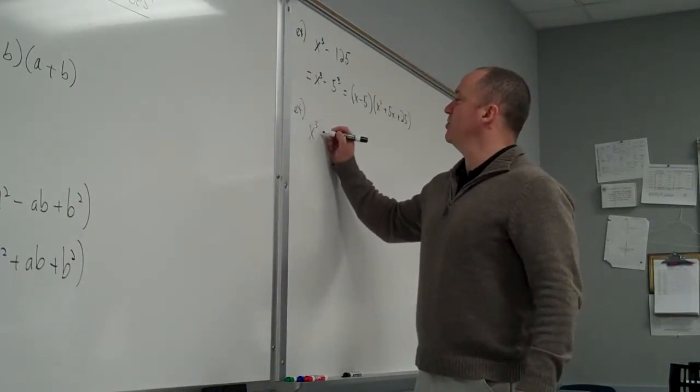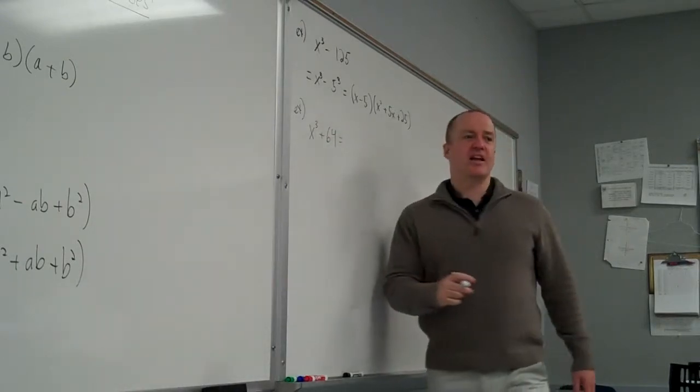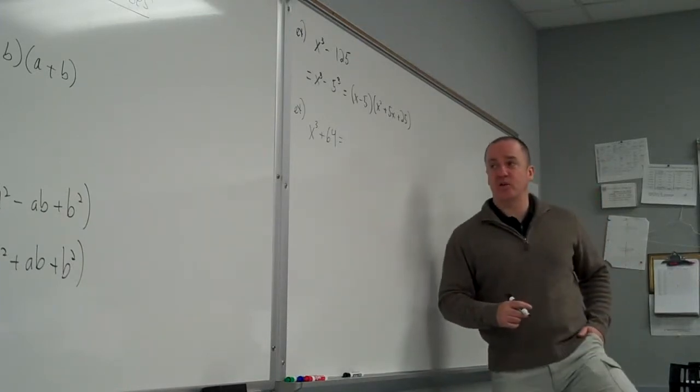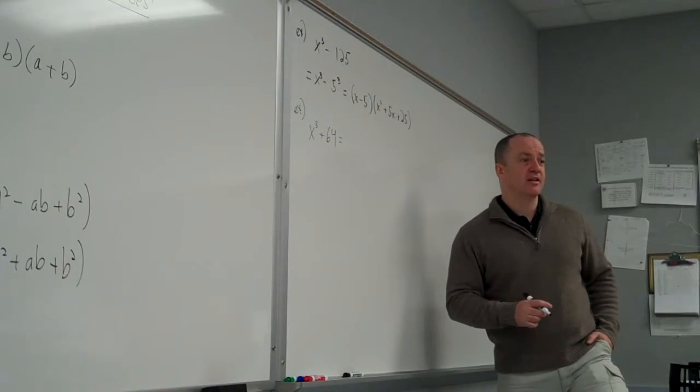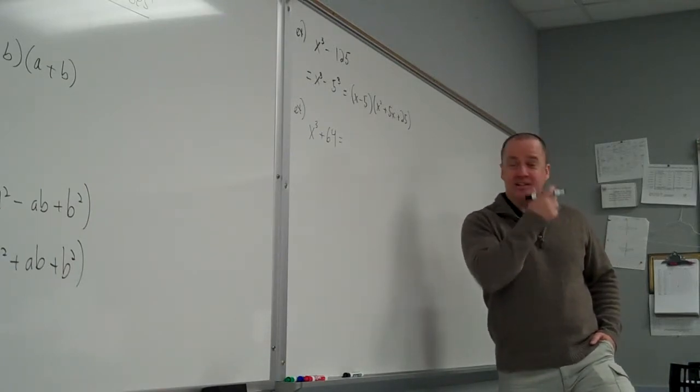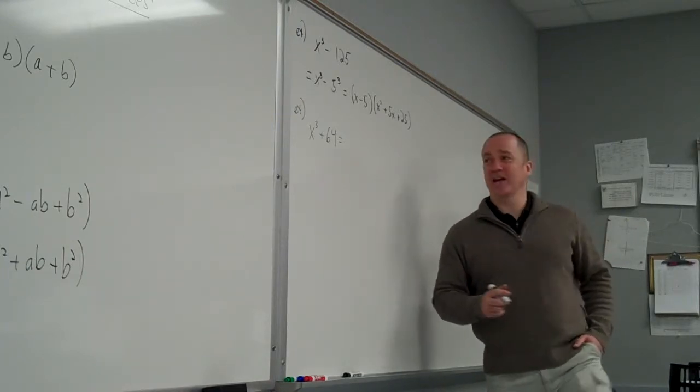I'll do another one that's fairly simple, I hope. If I give you x cubed plus 64, any idea if that is a perfect cube or not? It is. Eight. No, it's not. No, that's a square. Eight times eight. It's not. What's four times four times four? 64. 64. Okay.